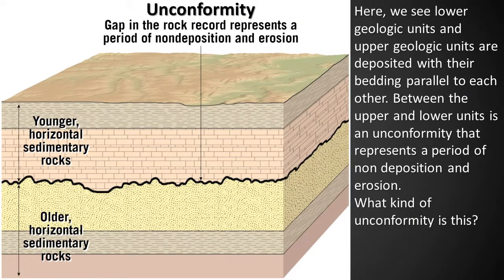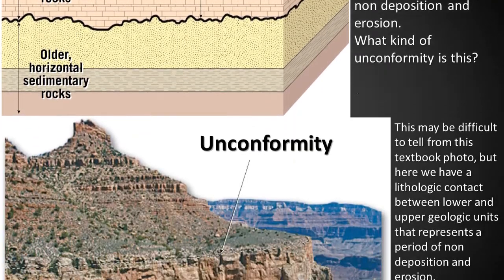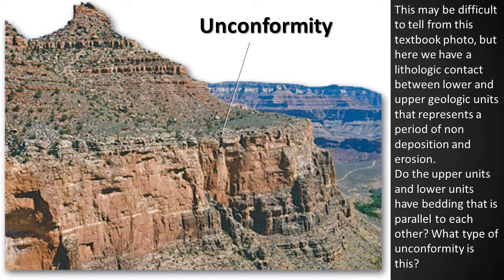Here we see lower and upper geologic units deposited with their bedding parallel to each other. Between the upper and lower units is an unconformity that represents a period of non-deposition and erosion. What kind of unconformity is this? That's right — this is an example of a disconformity. Here we have another lithologic contact between lower and upper geologic units representing a period of non-deposition and erosion, where the upper and lower units have bedding parallel to each other. That is also a disconformity.